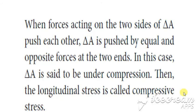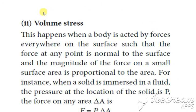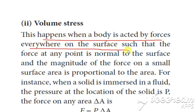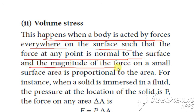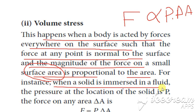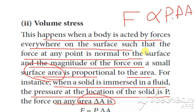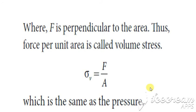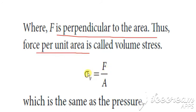Next is volume stress. This occurs when there is a change in volume. It happens when the body is acted upon by forces everywhere on the surface such that the force at any point is normal to the surface, and the magnitude of the force on a small area is proportional to that area. When a solid is immersed, the pressure is P and the force for area ΔA is F = P × ΔA, where F is perpendicular to the area. Force per unit normal area — that is volume stress.